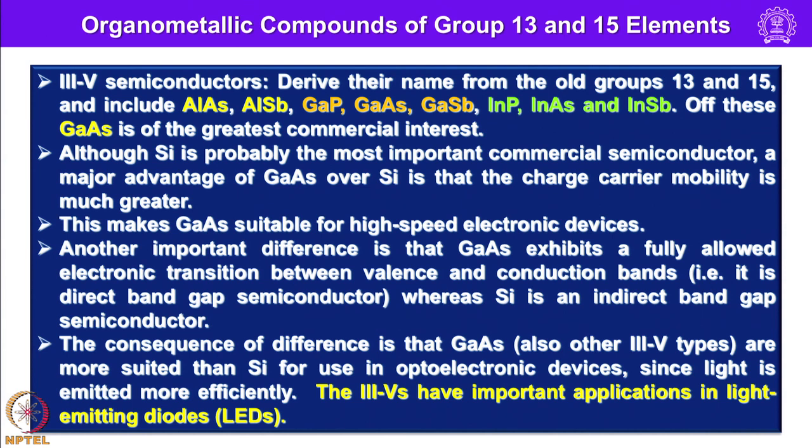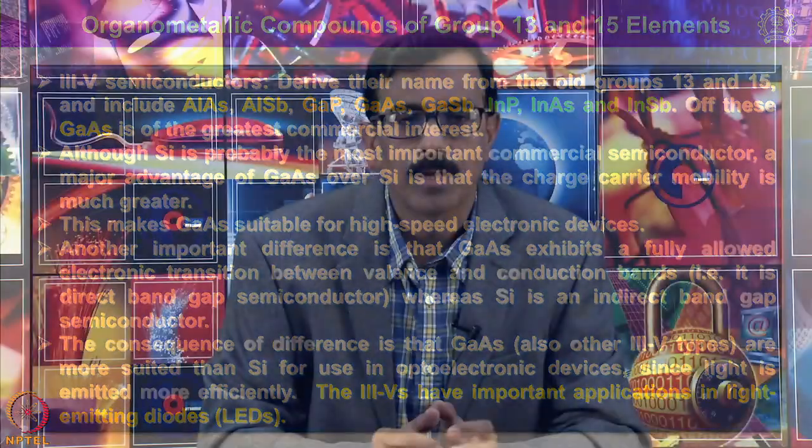These 3-5 types have important applications in light-emitting diodes as well. Let me stop here; in my next lecture I will conclude the organometallic chemistry of main group elements. Thank you very much.